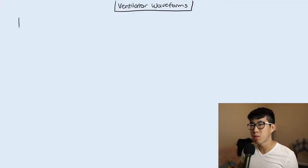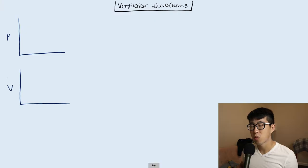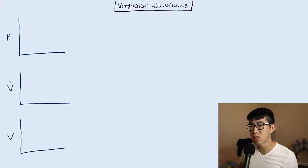When you look at your ventilator, there are going to be three main curves that you're really going to be looking at. The first one is going to be your pressure curve, and then you're going to have your flow curve, which is signified by a V with a dot on top of it. And then you're going to have your volume curve. The way that the pressure curve usually looks is that you're going to have a little bit of PEEP here and you're going to get this kind of shape — this is if you're in pressure control.